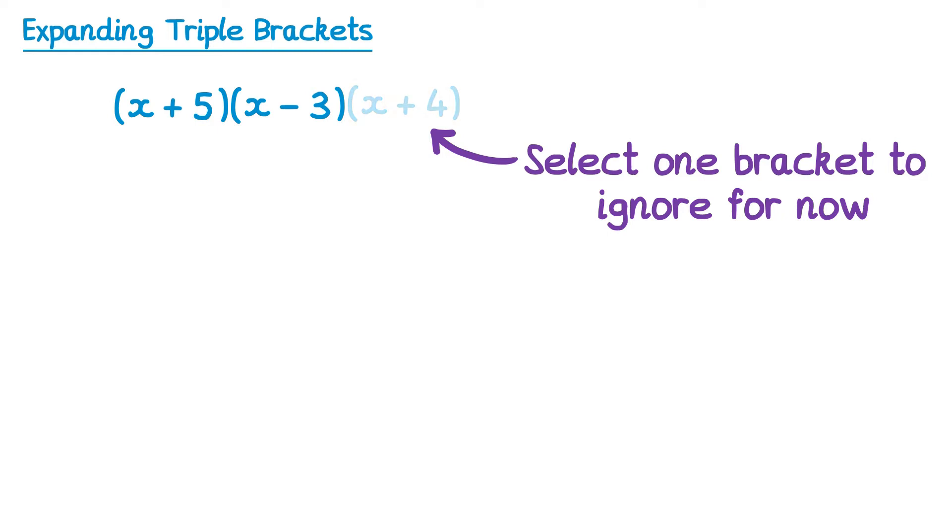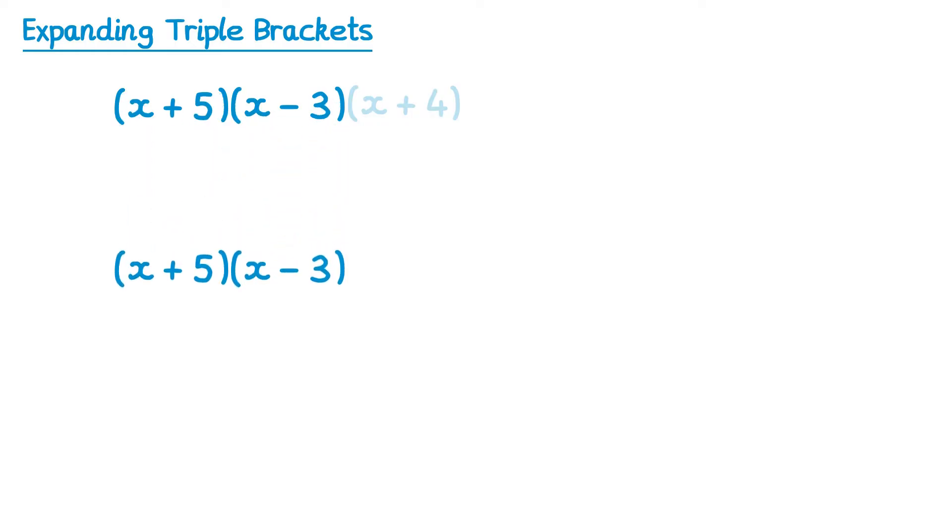Instead we focus on these two brackets and expand them in the normal way. So that could be FOIL, or GRID method, whatever method you normally use. I'm going to use FOIL for this one and expand these. So the first two terms, x times x, that's x squared. The outside terms, x times negative 3, that's negative 3x.